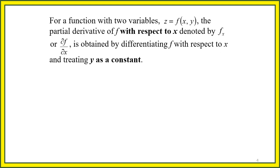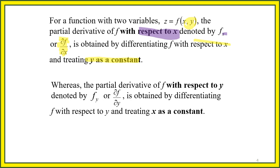For a function with 2 variables, z = f(x, y), the partial derivative of f with respect to x is denoted f_x. It is obtained by differentiating f with respect to x and treating y as a constant. Y is the other variable in the function.